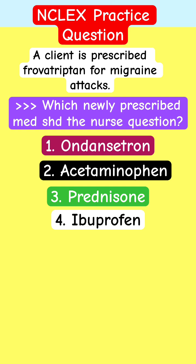Keyword pharmacology and test-taking strategy for nursing exams. You have a patient prescribed Frovatriptan — which of these four medications should you question? Ondansetron, Acetaminophen, Progesterone, and Ibuprofen.